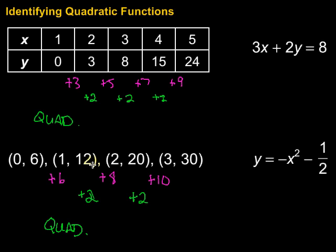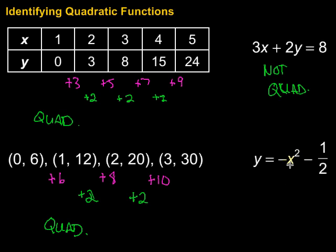Another way to identify quadratic functions is to look at the equation itself. What we need to look for is an x squared term — there has to be an x squared term, and that has to be the largest exponent we see within the equation. Looking at this first one, do we see an x squared term? Nope, we don't. So this is not a quadratic function. Then we look at this next one — we're looking for x squared, and sure enough, there's one that's squared. That is the largest exponent for an x value, so this is quadratic.